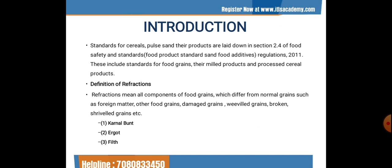The next refraction is filth. Filth can be defined as any objectionable matter contributed by animal contamination of the products, such as rodent, insects or bird matter, or any other objectionable matter contributed by insanitary conditions. It can be heavy filth or light filth. Heavy filth is material separated from the product by sedimentation based on different densities, using immersion liquids such as CHCl3. Examples include insect and rodent excreta, pellet and pellet fragments, sand and soil.